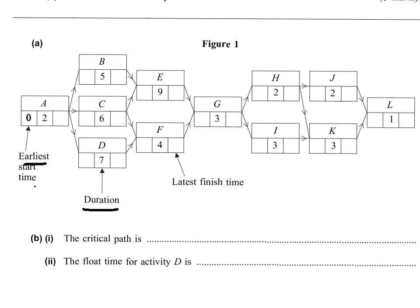So, to find the earliest start time for B, you're going to do 0 plus 2. So that's 2 here, and C as well, and D. Now we're going to look at activity E. Activity E cannot start until B and C are finished.